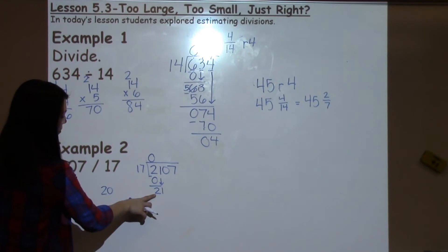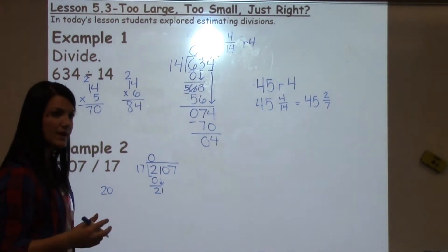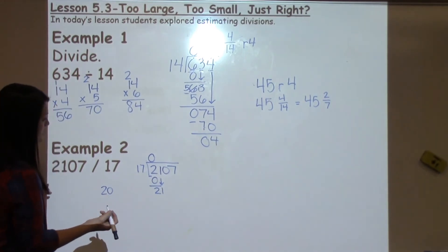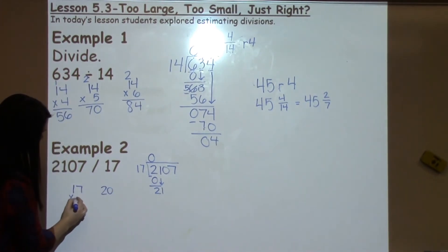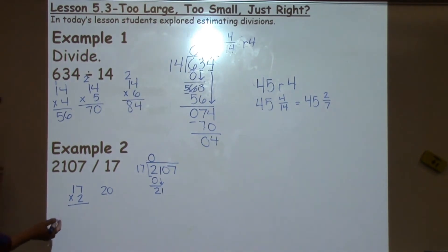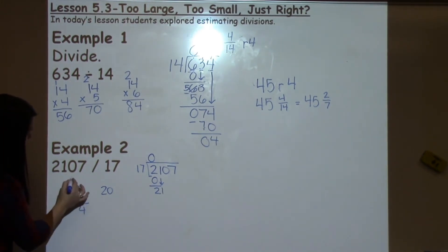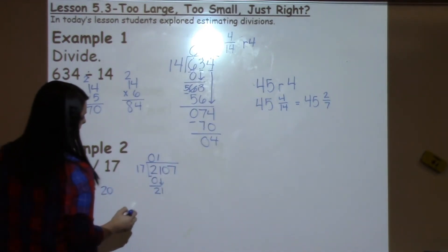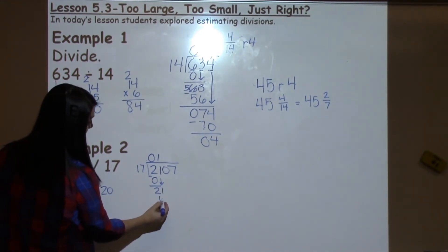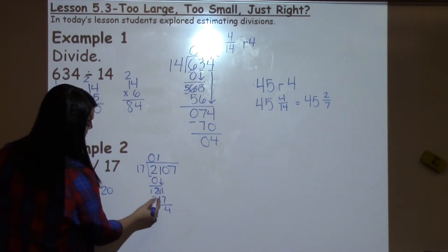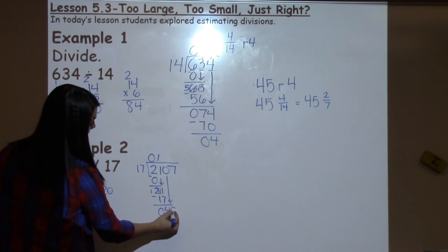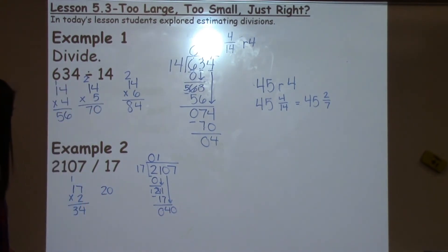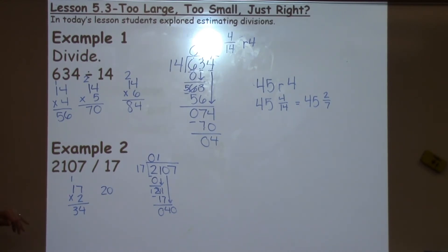Now think: how many times can 17 go into 21? That's fairly simple when counting by 17s. Students can try 17 times 2 to check — that gives 34, which is too much. So 17 can only go into 21 one time. Subtract: 11 minus 7 is 4, 1 minus 1 is 0. Bring down the 0. We don't want students to erase any work — we might use that fact later on.